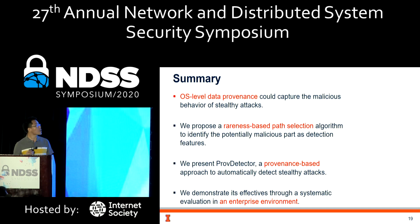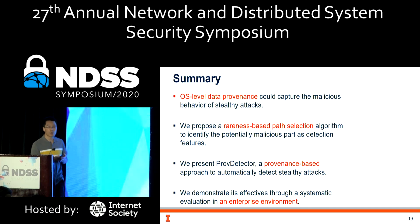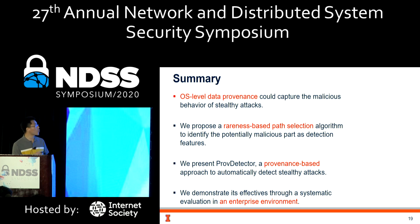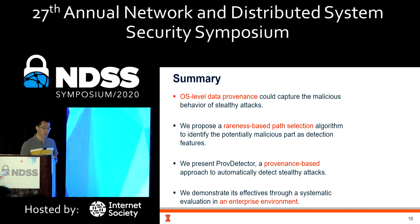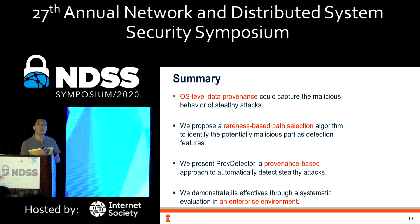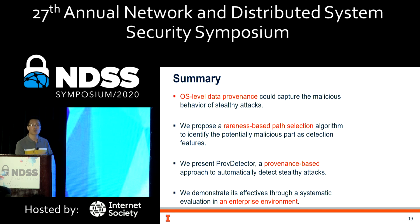As a summary: OS-level data provenance is a more general approach to capture the malicious behavior of stealthy malware. We propose a rareness-based path selection algorithm to identify potentially malicious parts in a data provenance graph as features for detection. We present ProDetector, a provenance-based approach to automatically detect stealthy malware, and demonstrate its effectiveness through systematic evaluation in an enterprise environment. Thank you. I'm happy to take any questions.